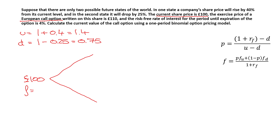To find the share price when it goes up, we do £100 × u = £140. When it goes down, £100 × 0.75 = £75. Below each node we write the option prices at those states: fu is the option price when the share price has gone up, and fd is the option price when the share price has gone down.